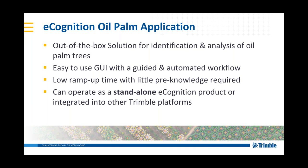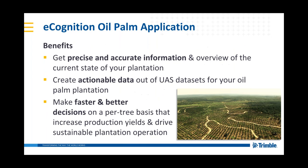This is a stand-alone product — it works without any of the other eCognition products such as eCognition Server or the eCognition Suite. But it can be integrated into our other Trimble platforms. The real benefits are that users get precise and accurate information of their plantation and an overview of the current state of growth. It allows users to create actionable data out of UAS datasets — for example, a count of palms and various statistics, enabling crucial decisions, faster and better decision-making on a per-tree basis to increase production yields and drive sustainable plantation operations.